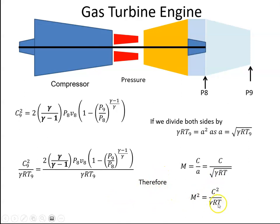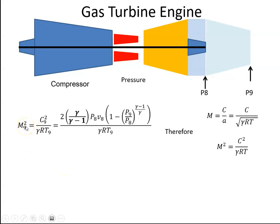C divided by the square root of gamma RT9 is the Mach number, so this is the Mach number here squared. We're going to substitute that into the equation so there we have our Mach number and start reducing that equation.